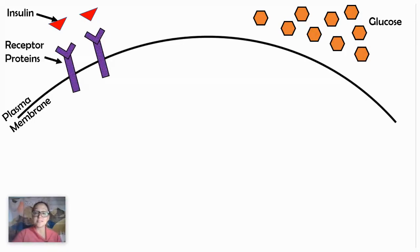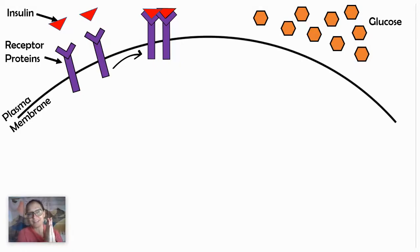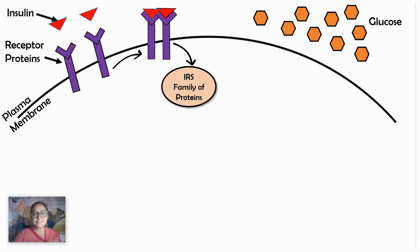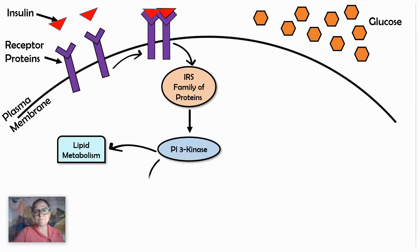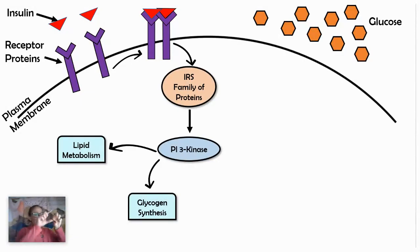When insulin reaches a target cell, there are receptor proteins for that insulin molecule. Insulin here is a ligand. When insulin attaches to these receptor proteins, they form a dimer and become activated. The intracellular region of these receptors will activate a family of proteins called the insulin receptor substrate proteins — the IRS proteins. We have a bunch of these proteins becoming activated, and eventually they'll activate a kinase, which can then activate other proteins to bring about a variety of cell responses, such as lipid metabolism or glycogen synthesis.